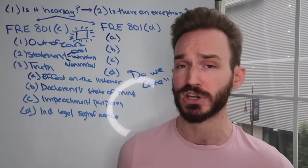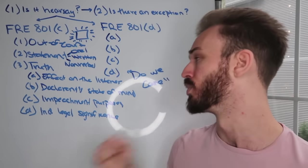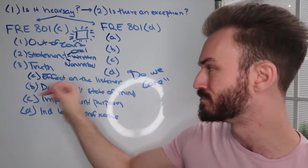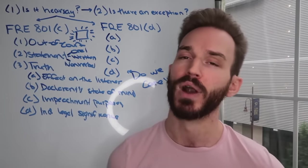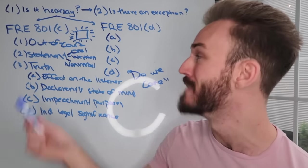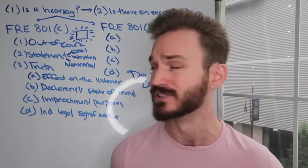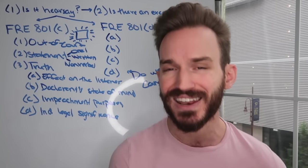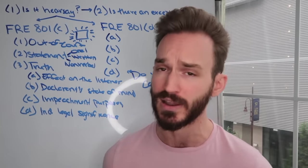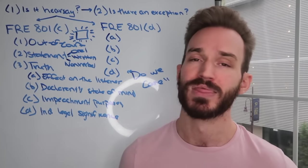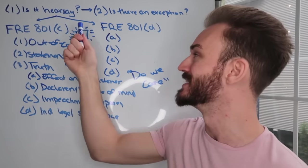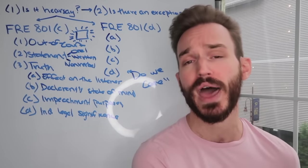Another common example: offering a statement to show the declarant's state of mind. The declarant is the person who made the out-of-court statement, and the witness is the person in the four walls of the courtroom testifying to that out-of-court statement. Importantly, the declarant and the witness can be the same person. A statement offered to show the declarant's state of mind is not being offered to prove the truth of the matter asserted.